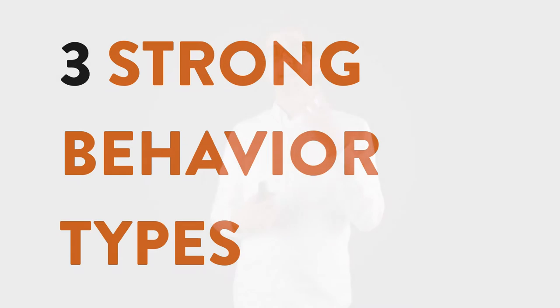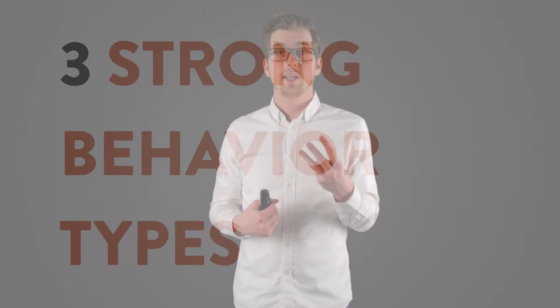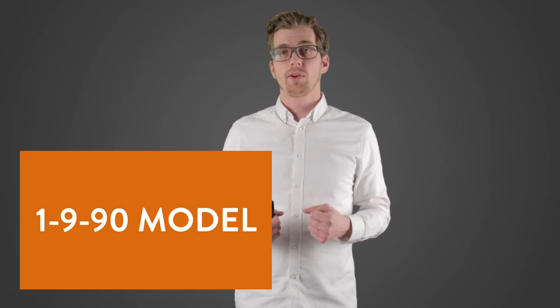What we've been able to discover and not disprove is that there are three very strong behavioral types within any open network that exists today. The model that we best think fits this scenario is the 1-9-90 model.